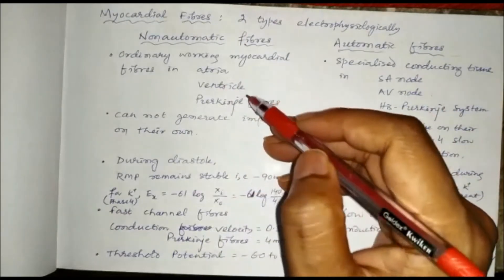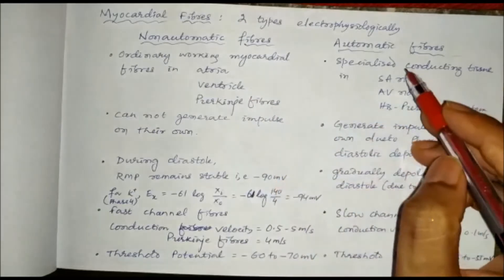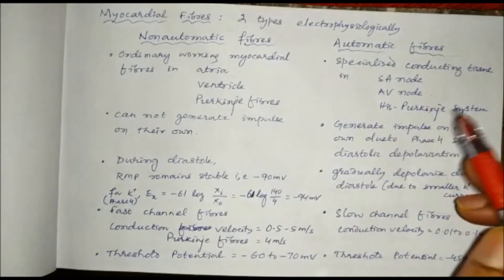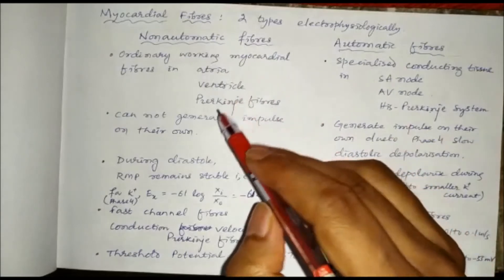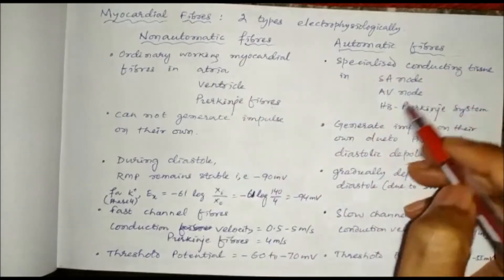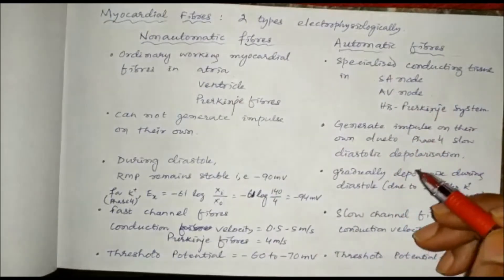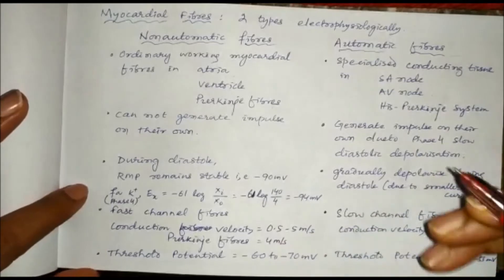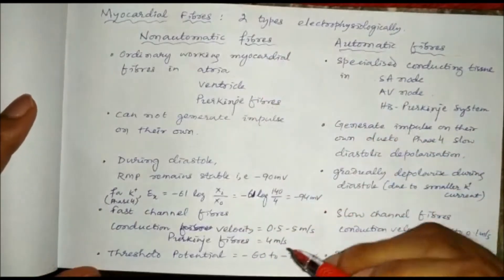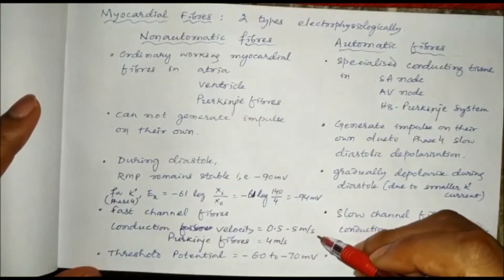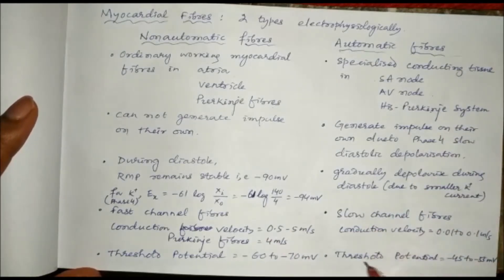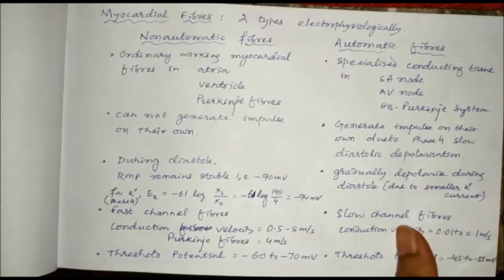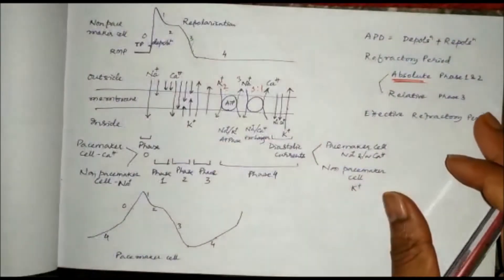Non-automatic fibers are present in the atria, ventricle, and Purkinje fibers. Automatic fibers generate impulse on their own, whereas non-automatic fibers cannot generate impulse on their own — they depend on the impulse coming from the pacemaker cells, mainly the SA node. Non-automatic fibers are also called fast channel fibers because the conduction velocity is 0.5 to 5 meters per second (in Purkinje fibers, 4 m/s). Automatic fibers are called slow channel fibers because conduction velocity is only 0.01 to 0.1 meters per second.